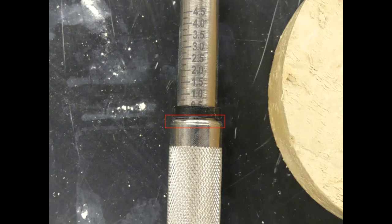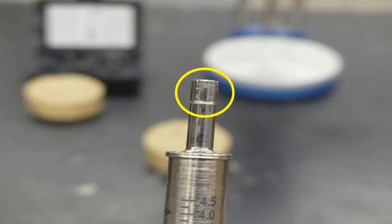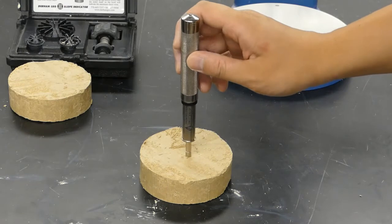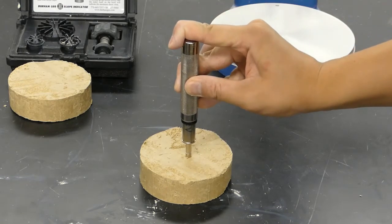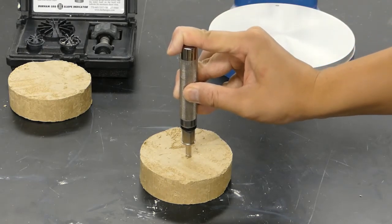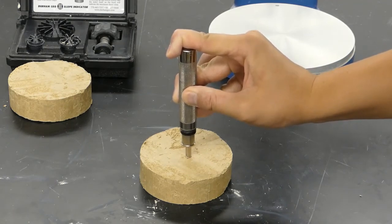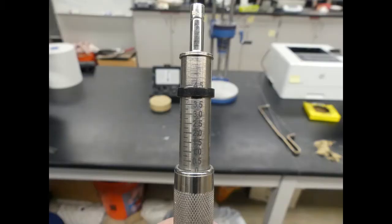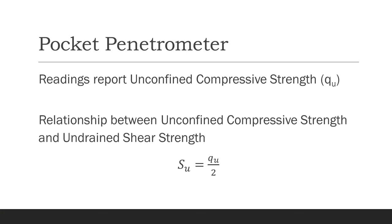Next will be the pocket penetrometer. The pocket penetrometer is an inexpensive handheld device that reports the unconfined compressive strength of the soil. The reading is marked by the plastic band. To start the test, slide the band to the zero mark. We will then insert the penetrometer into the soil, up to the groove. In this demonstration, the reading for this test was about 3.9 kilograms per square centimeter.